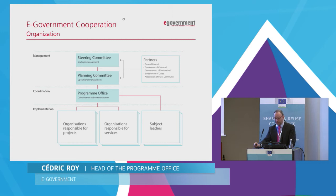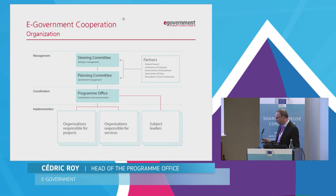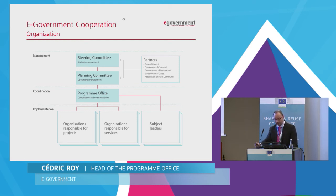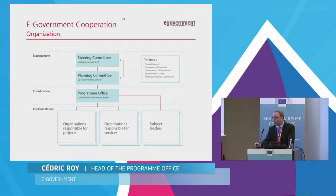All committee members are designated and paid by their own organizations. Specialized organizations are responsible for implementing the strategic projects and services — among those, you will find federal offices or associations. In the middle is the program office, which consists of four employees — just four — and we are in charge of coordination and communication. We are also responsible for all financial aspects and for the development of the strategy.